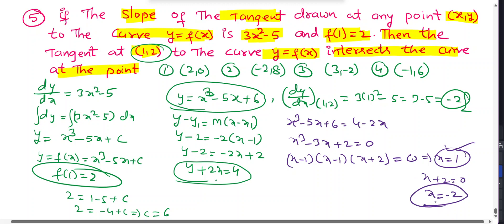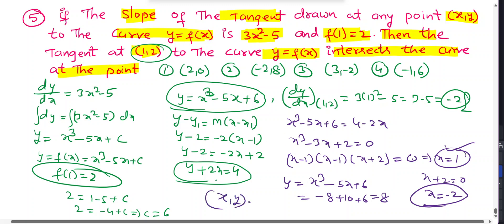Substituting x = -2 into the curve: y = (-2)³ - 5(-2) + 6 = -8 + 10 + 6 = 8. Therefore the required point is (-2, 8). The second option is the correct answer.